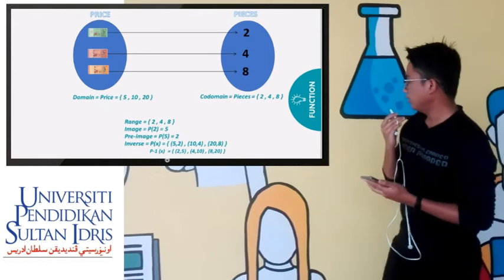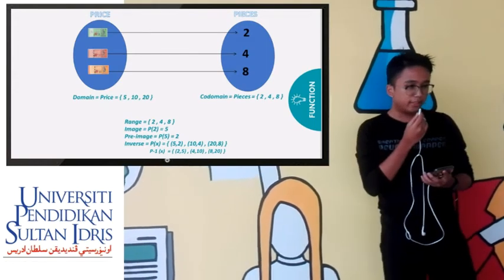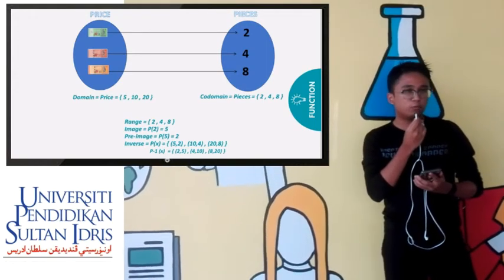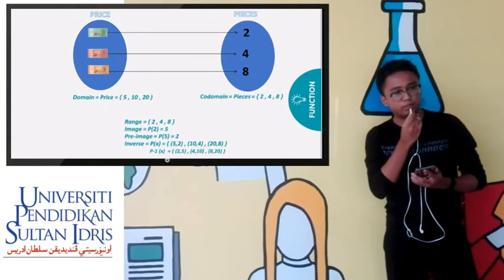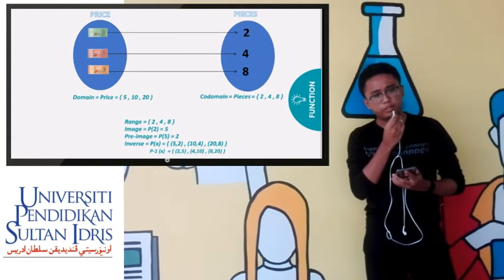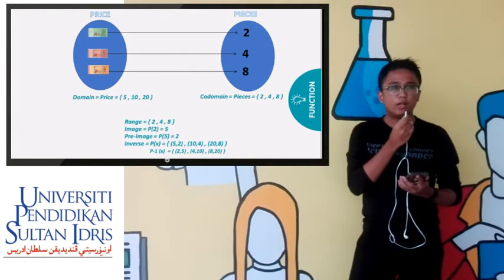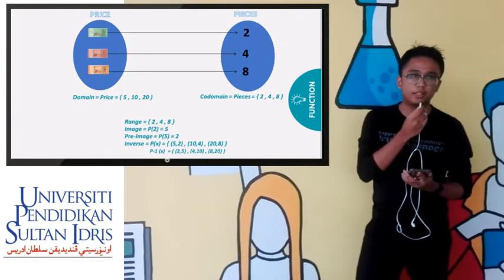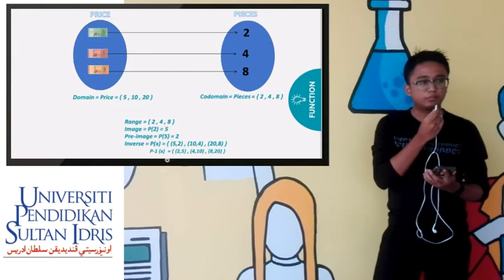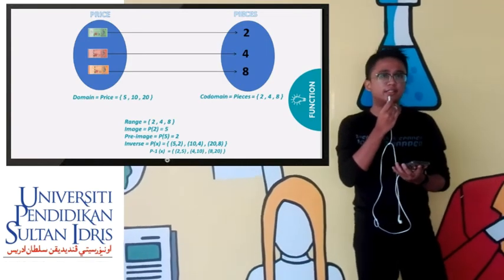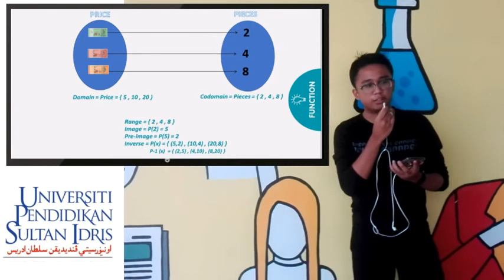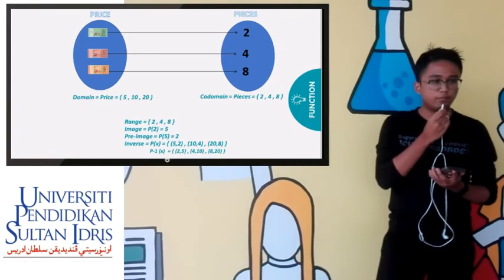For the image, you can see that if you buy two pieces, you will get five. The image of two pieces is five ringgit. While the pre-image of five ringgit is two. So it is something that is inversely proportional to each other.